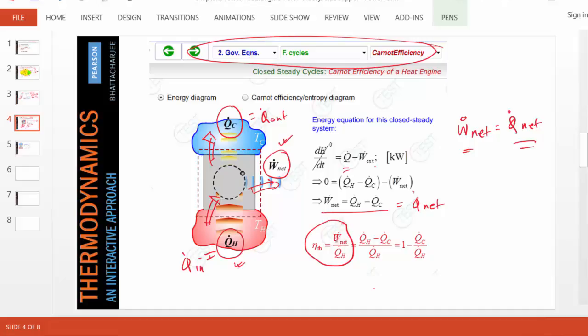In the efficiency definition, we can substitute Ẇ_net as Q̇_H - Q̇_C, leading to this formula. This will be a very common formula: 1 - Q̇_out/Q̇_in or 1 - Q̇_C/Q̇_H. This formula for thermal efficiency will be valid whether the heat engine is perfect, ideal, or an actual engine.